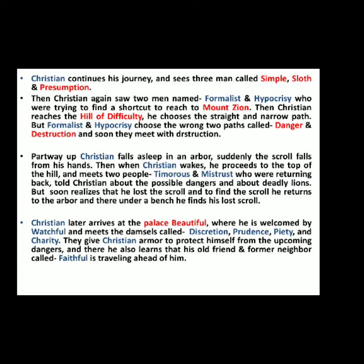At the Hill of Difficulty, Christian takes the narrow and difficult path, while Formalist and Hypocrisy take paths called Danger and Destruction, which prove fatal for them. Christian falls asleep along the path and loses his scroll. After waking, he meets two men called Timorous and Mistrust, who warn him of numerous challenges ahead including two lions at the entrance of a palace. Christian doesn't listen and moves forward, but then realizes he has lost his scroll. He asks God for forgiveness, goes back to the spot where he napped, finds the scroll under a bench, and resumes his journey up the hill.